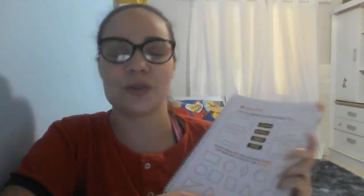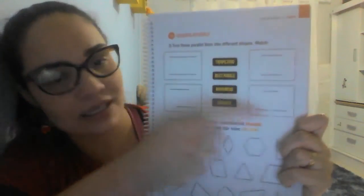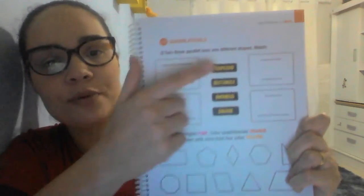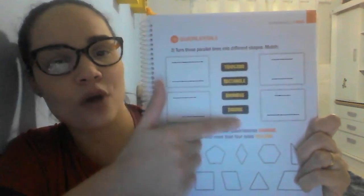Olá, gente! Tudo bem, família? Hoje nós vimos mais algumas formas geométricas, que são as formas que eu demonstrei hoje — as fotos que eles irão produzir. E depois ligar nos nomes que estão aqui: trapezoid, rectangle, rhombus, and square.